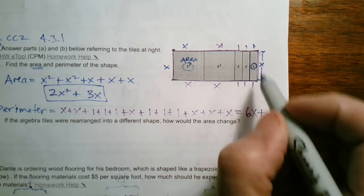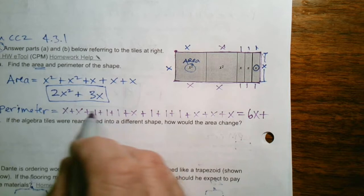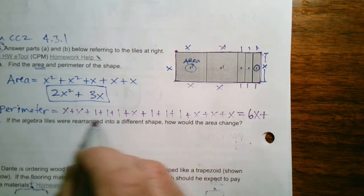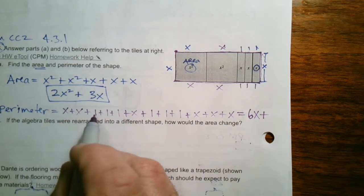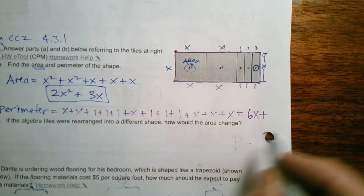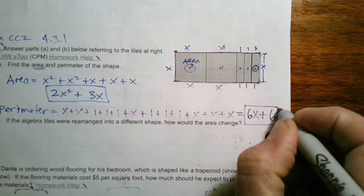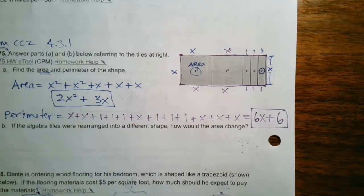There's 1, 2, 3, 4, 5, 6. And I can look at it here in my sum statement here, my long expression. There's 1, 2, 3, 4, 5, 6 ones. So the shorter version of that perimeter is 6x plus 6.